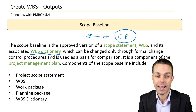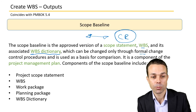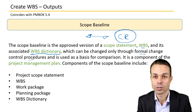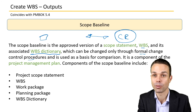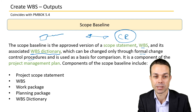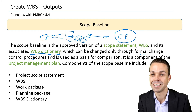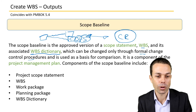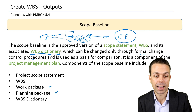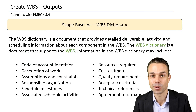Once the scope baseline is approved, it can only be changed through a formal change control procedure, and it's used as a basis of comparison as the project progresses — this is the scope we've locked in, and now we track whether we're on track, how cost and schedule are going, and whether the scope itself is changing. Components of the scope baseline include work packages, planning packages, the WBS dictionary, the WBS itself, and the project scope statement.